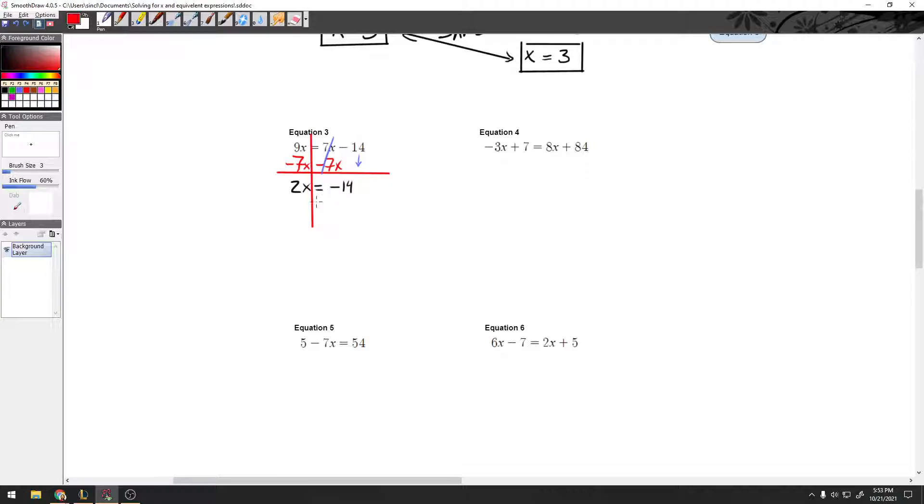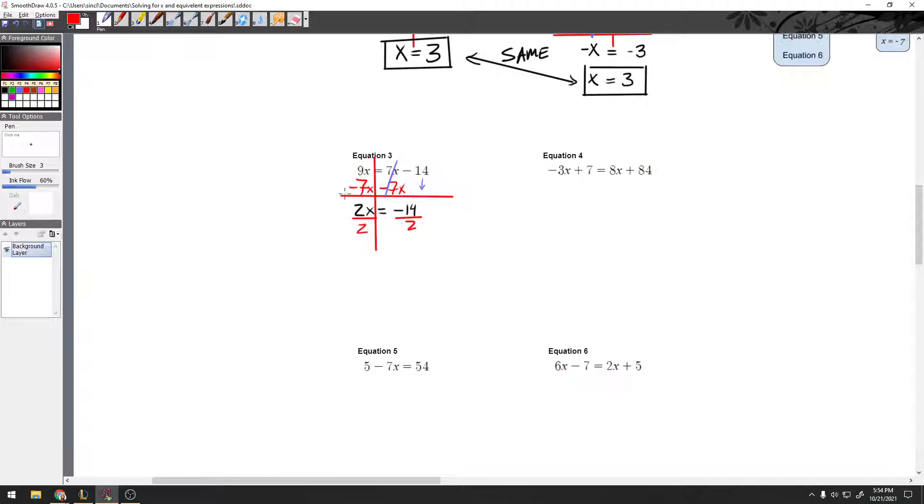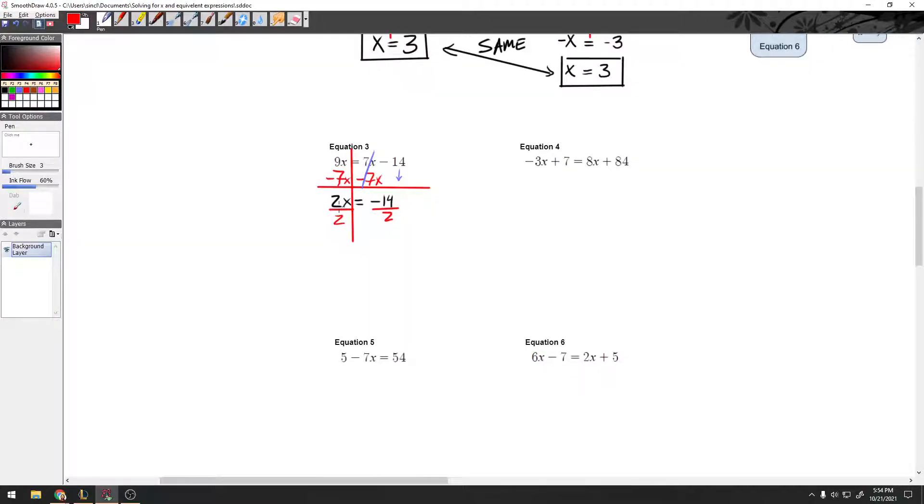And these become 2x equals negative 14. This negative is also commonly forgotten by my students. Next move, let's get rid of this 2 that's harassing the x by dividing by 2. Since the 2 is right next to the x, he's multiplying. So, divide by 2 on both sides. Then, we go ahead and we can cross this out, and the left-hand side is just going to have x equals, and this is going to be negative 7.